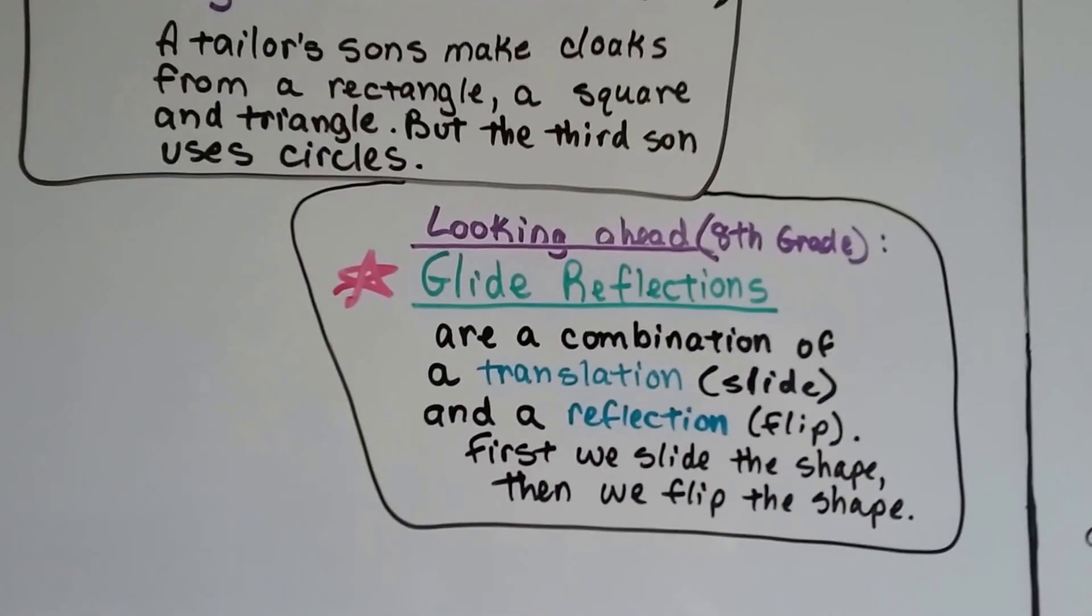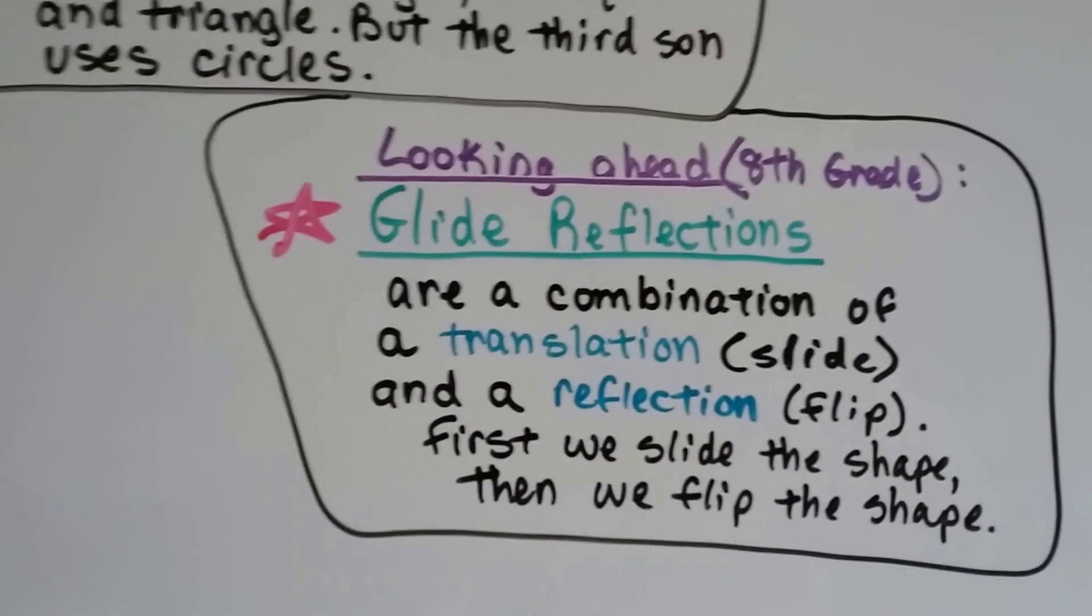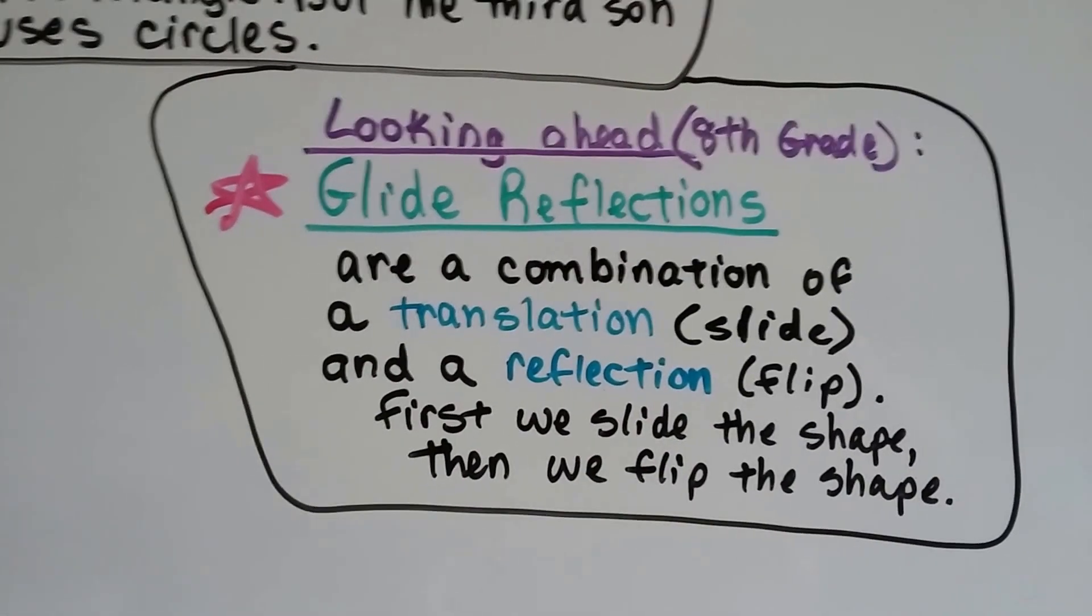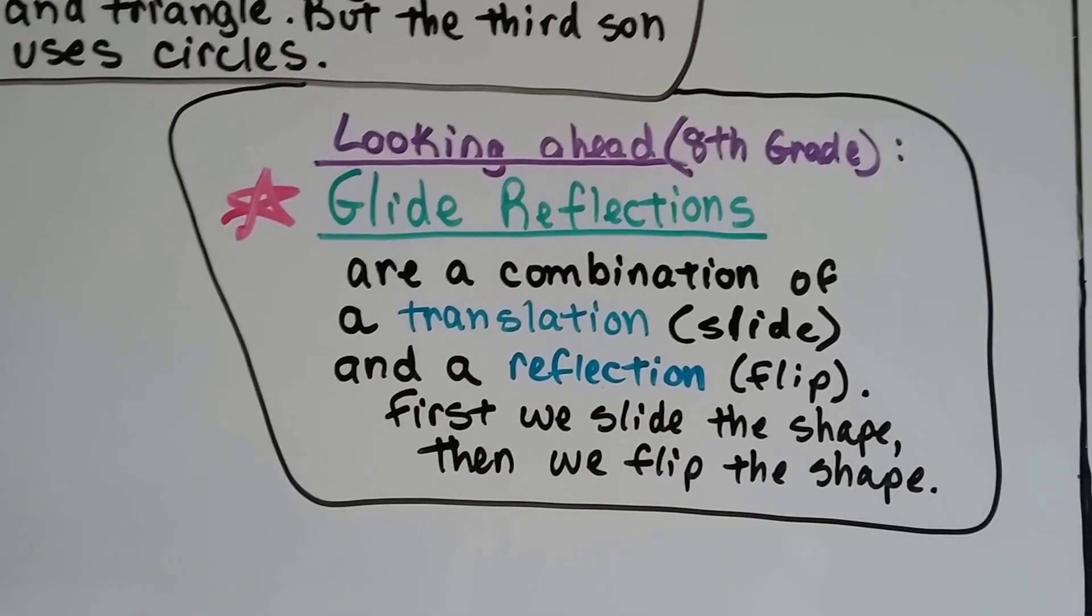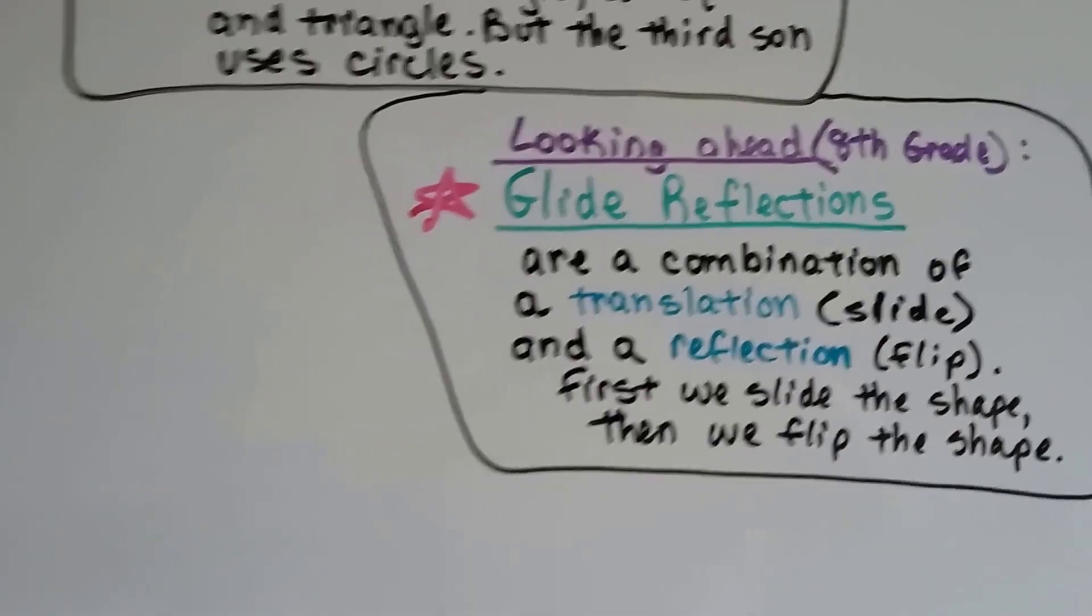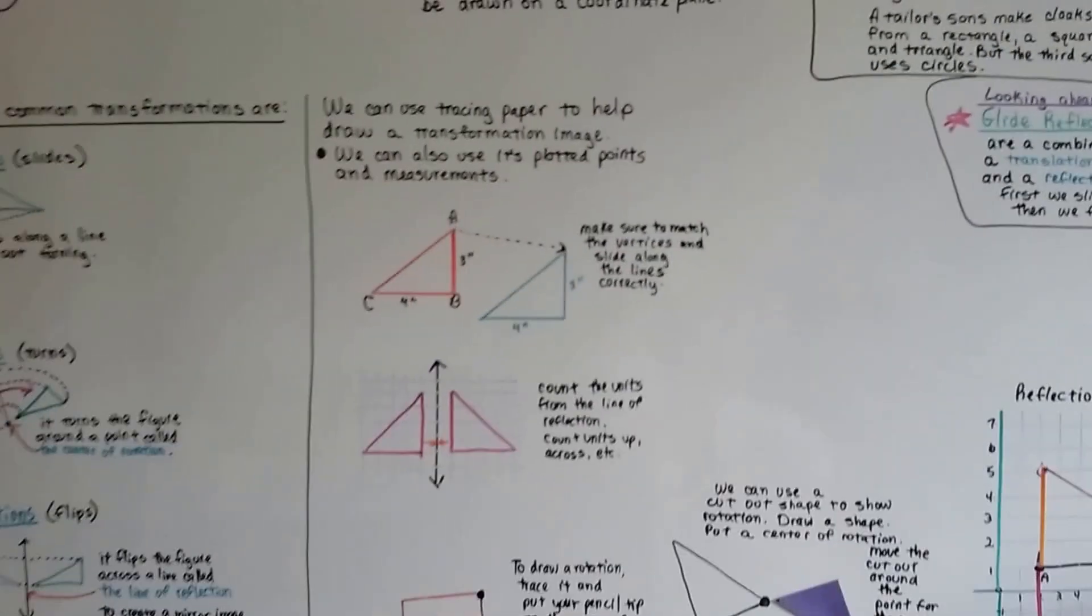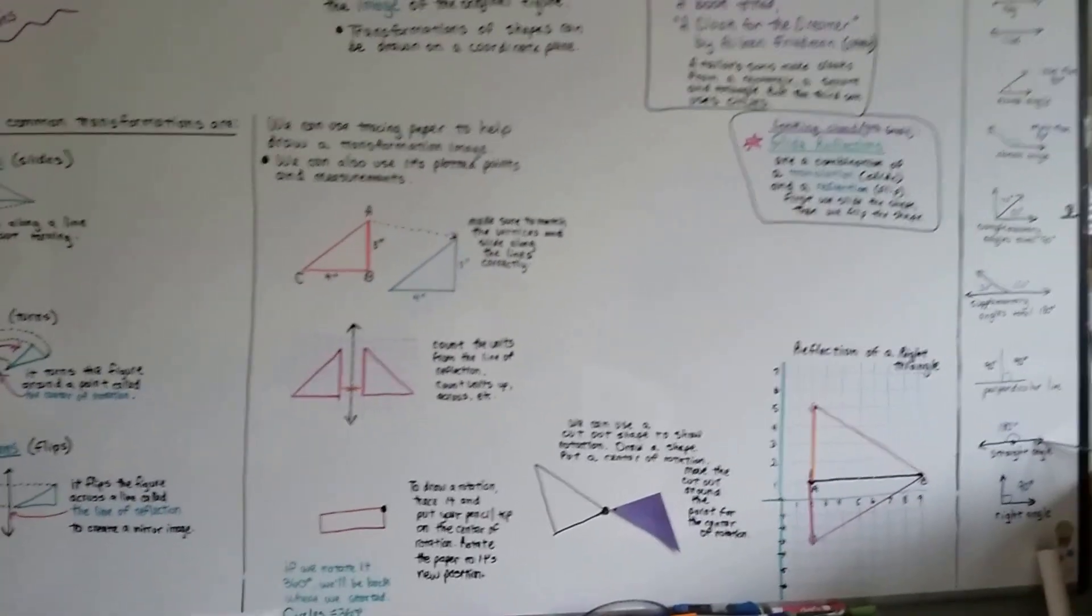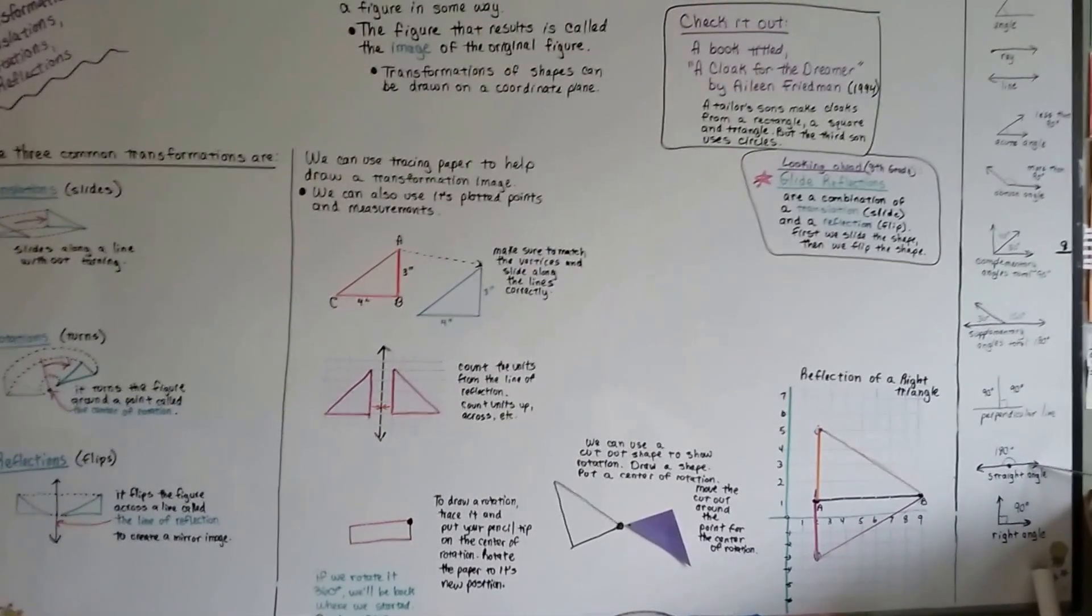And then also looking ahead for 8th grade, because this is 6th grade math, there's a thing called glide reflections, and they're a combination of the translation, the slide, and the reflection flip. First you slide the shape, and then you flip the shape. So it's a combination of both a translation and a reflection. So look forward to that as you get older and you start getting into the other levels of math. So that's like a little looking ahead tidbit for you, alright? But check out the book, A Cloak for the Dreamer. It's really cute.